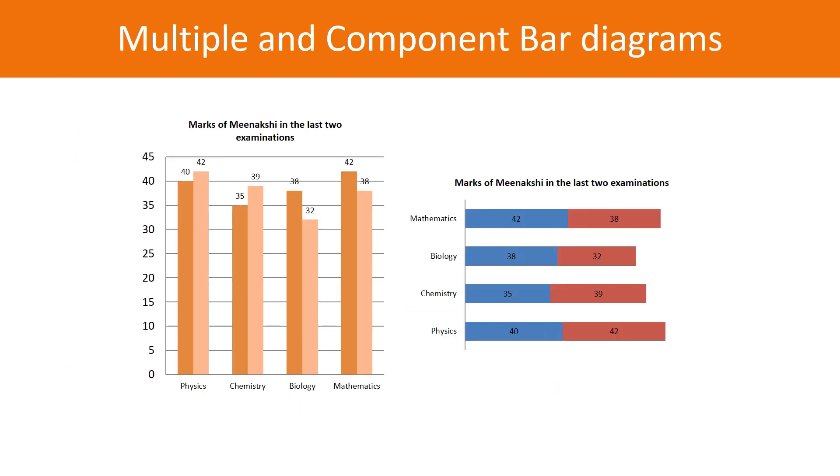In the previous graph, you learned how to draw a simple bar diagram. Two other forms are multiple and component bar diagrams, drawn when you need to compare data. To compare Meenakshi's marks in the last two examinations, we erect two different rectangles for a multiple bar diagram. In a component bar diagram, they become parts of a single bar.